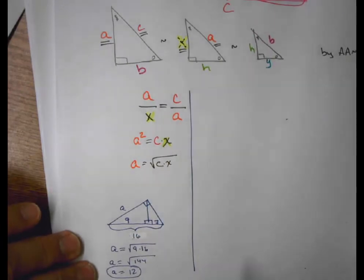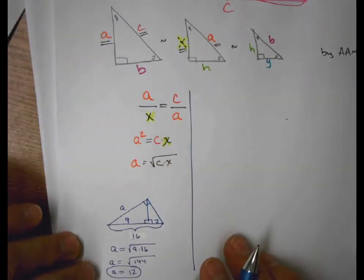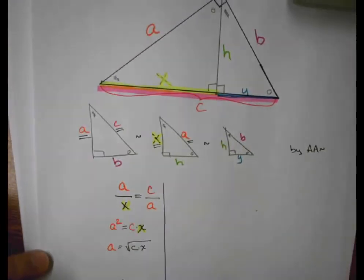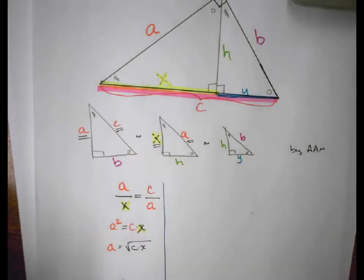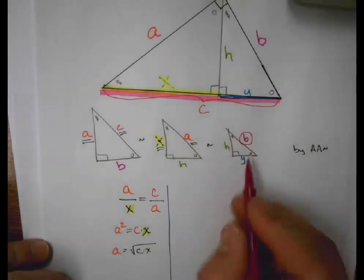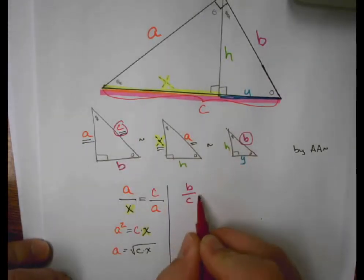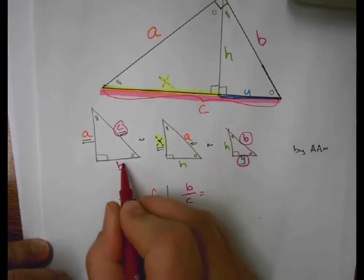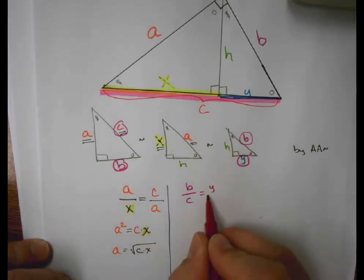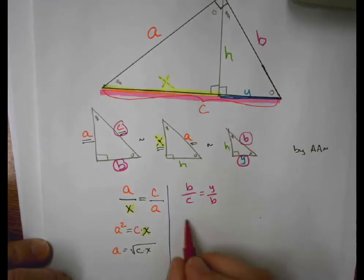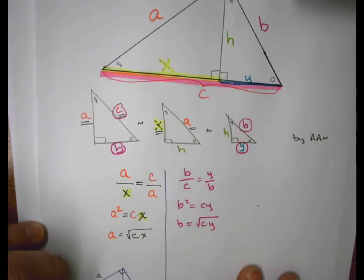Now, I can create this same relationship for two other scenarios. This is the relationship of A. I can do the same thing with B. I can say that B is to C as Y is to B. Do my cross multiplying. B squared is equal to CY. So B is equal to the square root of C times Y.